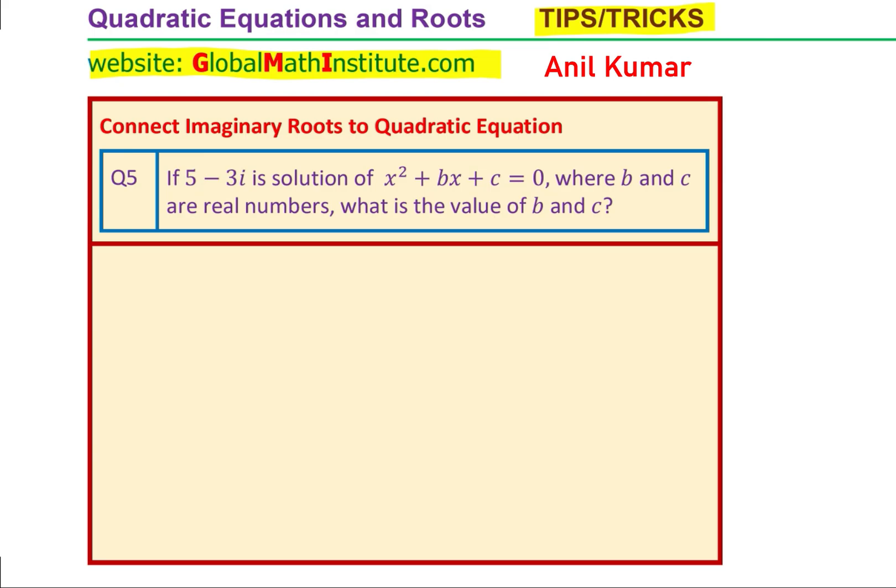We are given the roots and these are complex roots, so let us rewrite the roots. We are given that the roots are 5 minus 3i. That means the other root should be 5 plus 3i. These roots are always conjugate pairs.